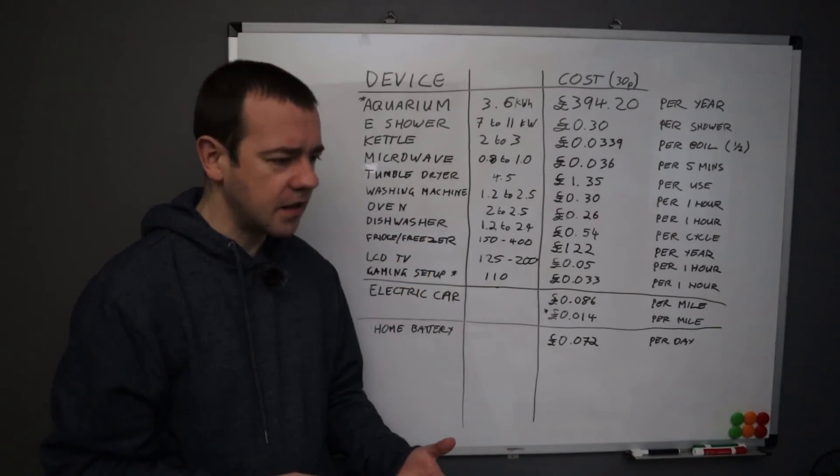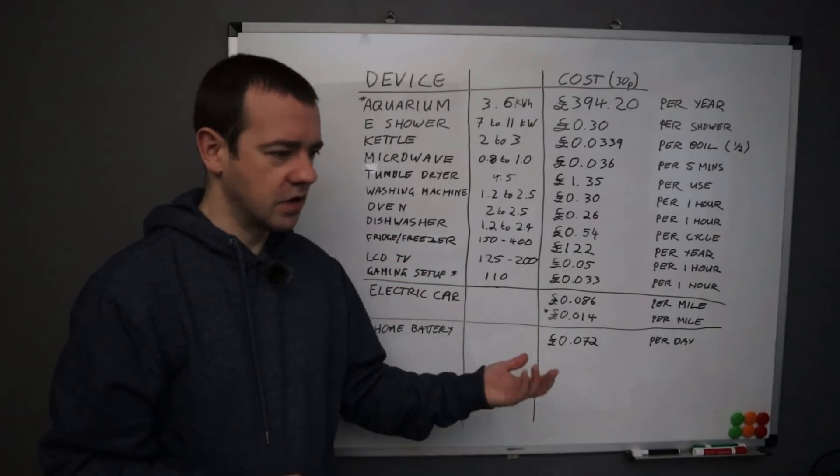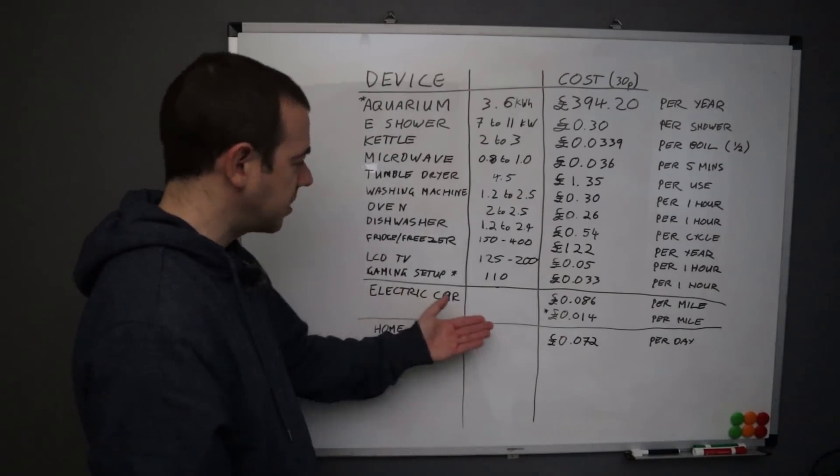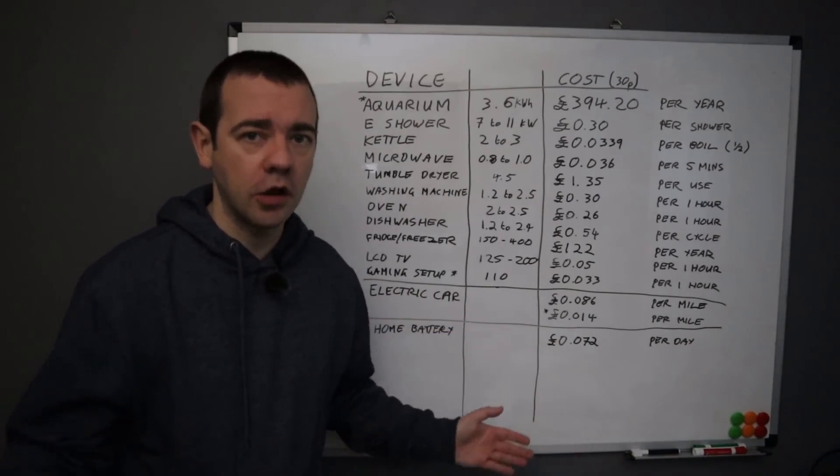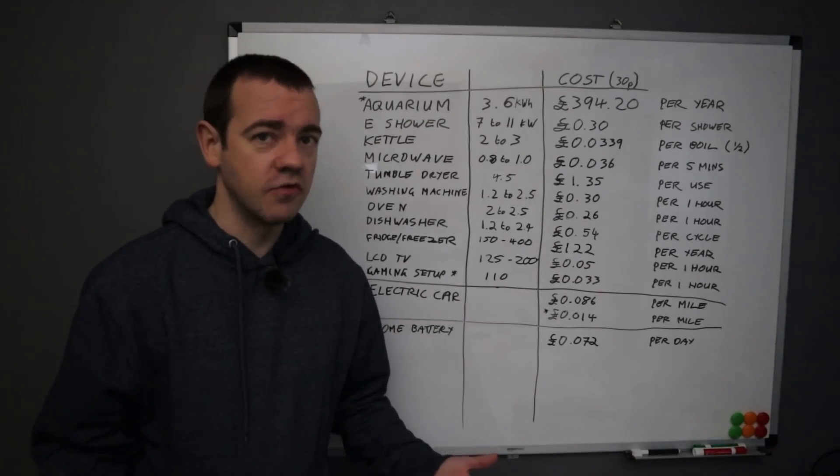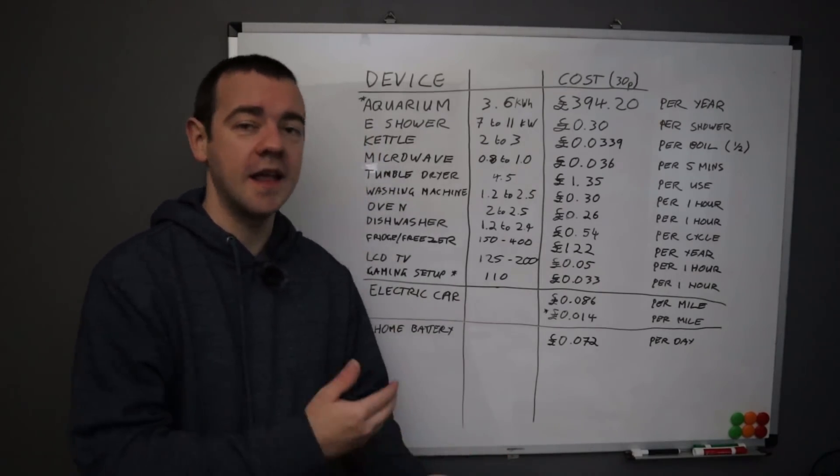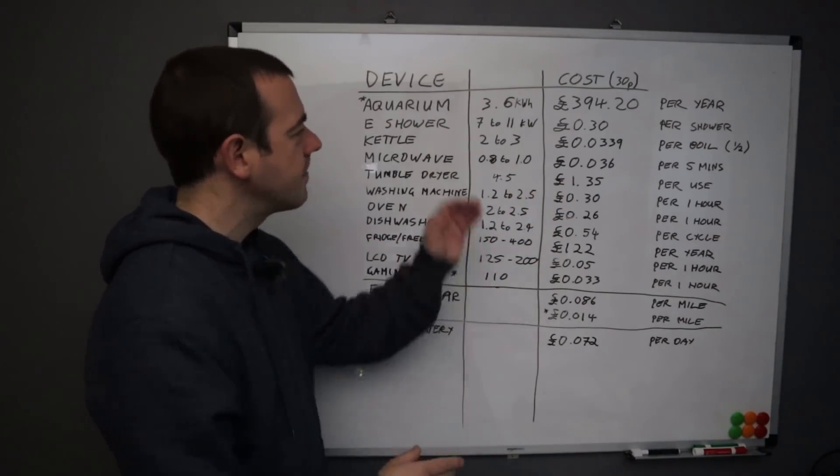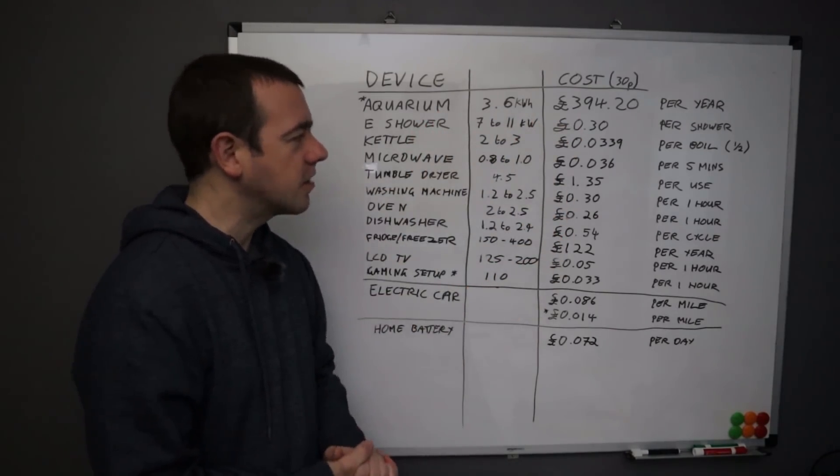These use 7 to 11-ish on average. So an electric shower uses substantially more in one go anyway than a charger. You never see anything in the Daily Mail that says, oh, electric showers are going to melt the house down or anything like that. Obviously an EV charger will run for a lot longer, a hell of a lot longer, but it remains there's nothing wrong with a 6, 7 kilowatt charger running in your house.